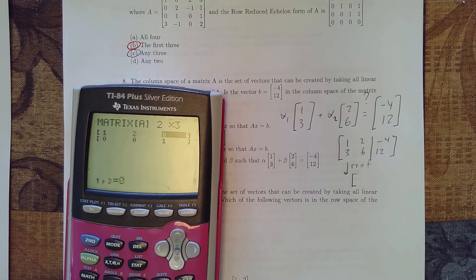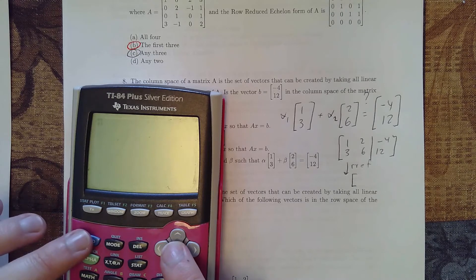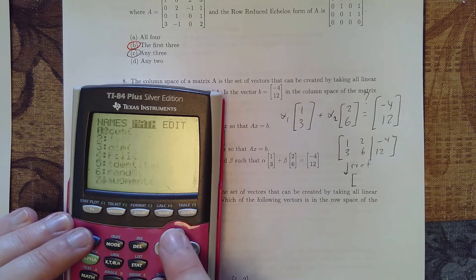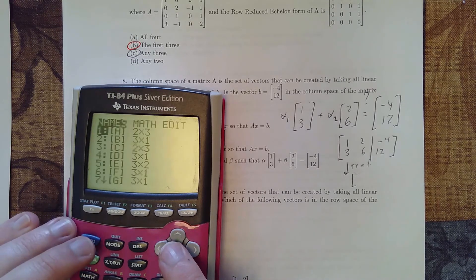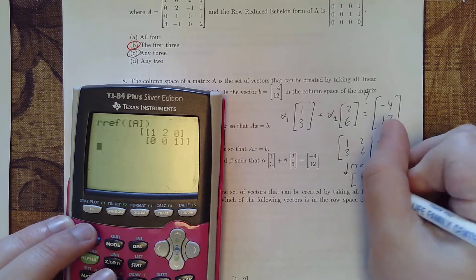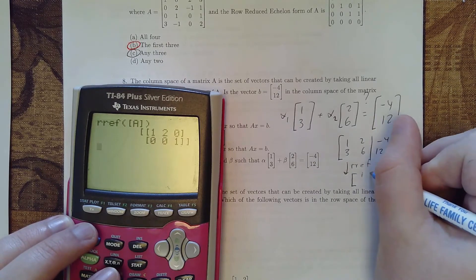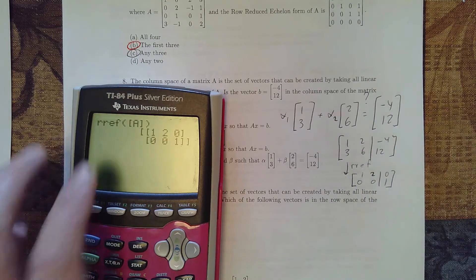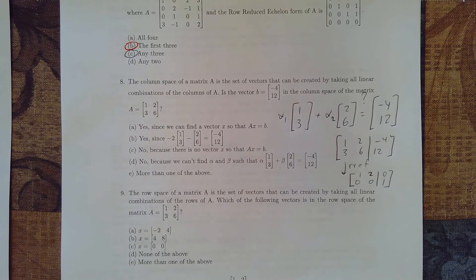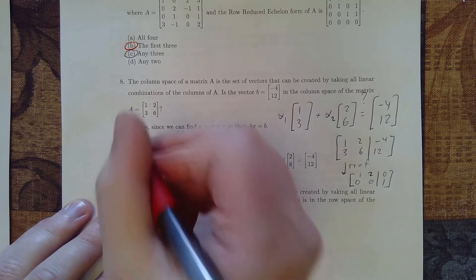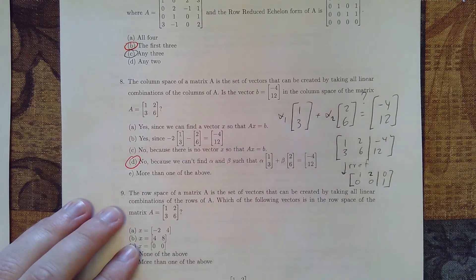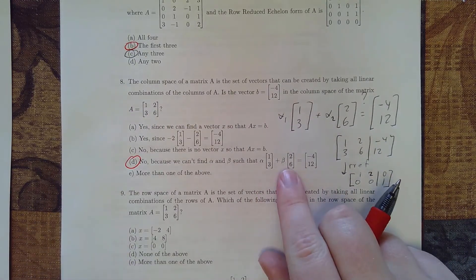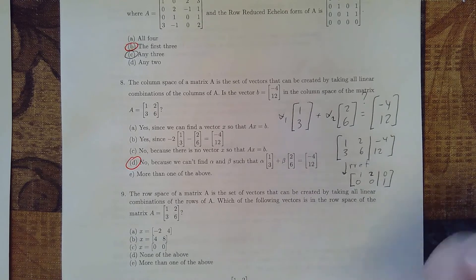So if we do that, let's make a matrix. We want it to be 2 rows, 3 columns, 1, 2, negative 4, 3, 6, 12. Then go ahead and get the reduced row echelon form of A, and we get 1, 2, 0, 0, 0, 1. So in the end, there's no solution for this problem. So we can't find any alphas or betas such that this linear combination ends up working.